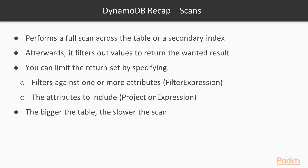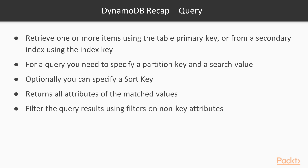As a best practice, use queries instead of scans. Queries allow you to retrieve one or more items using the table's primary key or from a secondary index using the index key. For a query, you must specify a partition key and a search value; optionally, you can specify a sort key with different comparisons. It returns all attributes of matched values, but you can use projection expressions to retrieve a subset, and filter expressions to filter on non-key attributes. Queries are much more efficient than scans.